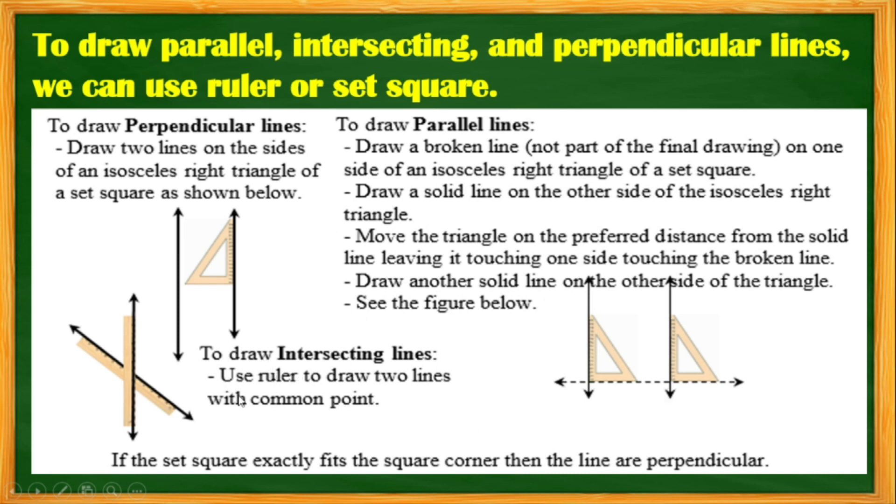To draw an intersecting line, use a ruler to draw two lines with common point. This would be an intersecting line. Common point is this one.